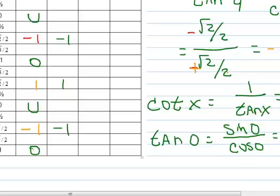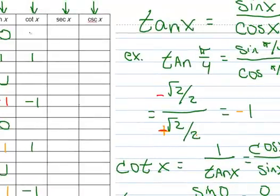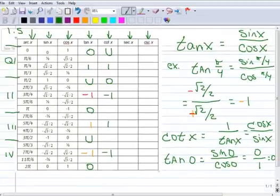Using the reciprocal relationship, let's fill in the cotangent. If the tangent is 0, that means 0 is in the numerator, so for the cotangent 0 is in the denominator — that's undefined. At pi over 2, if the tangent is undefined the cotangent is 0, because 0 is in the numerator. At pi, cotangent is undefined. At 3 pi over 2, it's 0. And 2 pi is undefined. You can do the pi over 6 and pi over 3 values on your own.